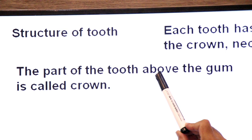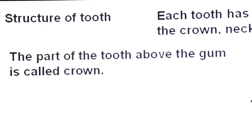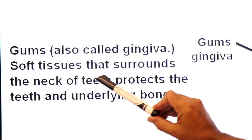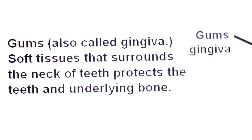The part of the tooth above the gums is called the crown part. Now, how do you define gums, also called gingiva? Gum, also called gingiva, is the soft tissue that surrounds the neck region of the teeth and protects the teeth and the underlying bone.